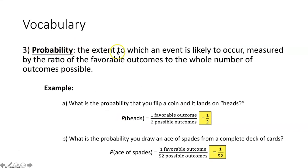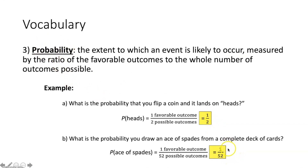Probability is the extent to which an event is likely to occur, measured by the ratio of the favorable outcomes to the whole number of possible outcomes. It will typically be a fraction between zero and one — zero meaning the event will not occur, one meaning it definitely will. Percent probability is just that ratio multiplied by 100.